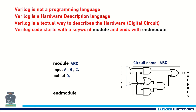Now we have a, b, c as inputs in the circuit, and the output is q. In the code, we are going to represent those inputs with the keyword 'input' followed by the names a, b, c one after the other. The output port q is represented with the keyword 'output' followed by the port name q.